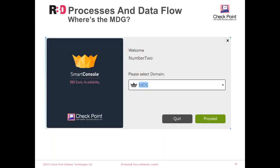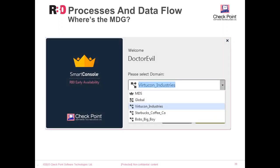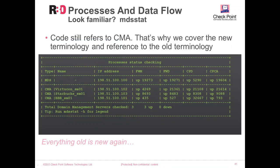In R80, everything has been unified — there's no dedicated application. You use your normal SmartConsole and connect to the MDS server IP address. When doing that, you'll be asked whether to connect to the MDS level, to a certain domain inside MDS, or to the global database. If you select the MDS level, you'll have a similar view as the previous multi-domain GUI, but inside SmartConsole — where you can work with domains, create new domains, enter domains, and assign the global database to certain domains. Inside the code, there are still references to CMA, which stands for customer management add-on, equivalent to a domain with its domain management server.